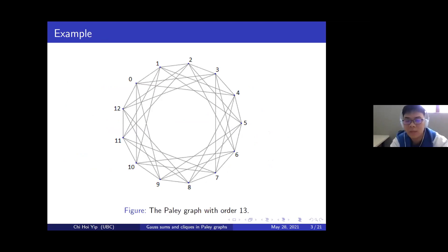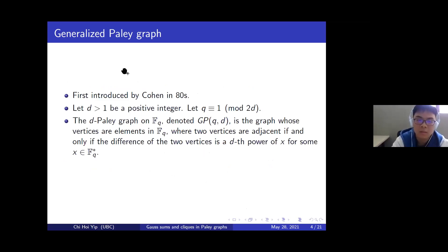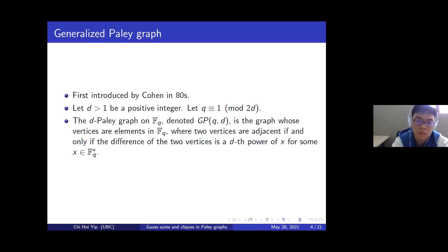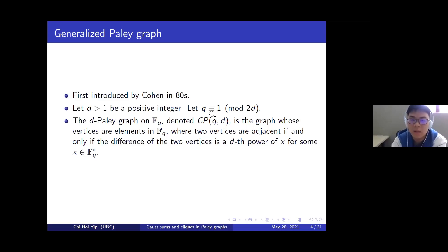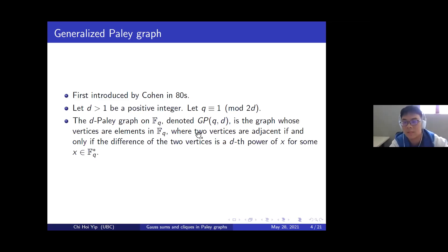Roughly speaking, Paley graphs correspond to squares, and if we just replace squares by D-th powers, then we get the so-called D-Paley graphs. Generalized Paley graphs were first introduced by Cohen in the 1980s, and later several other authors also independently discovered this type of graph. We assume q is congruent to 1 modulo 2D so that our graph is undirected. We denote the D-Paley graph by GP(q,D) — G for generalized and P for Paley — whose vertices are elements of F_q, and two vertices are adjacent if and only if their difference is a D-th power in F_q star.